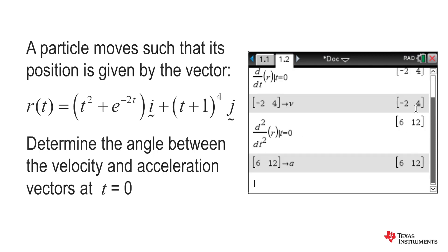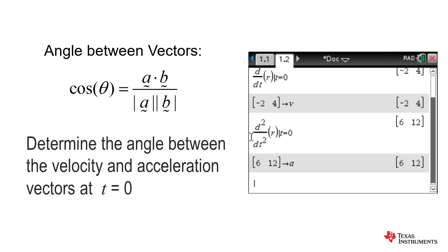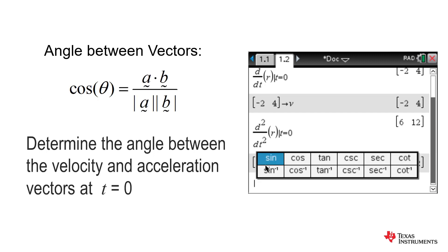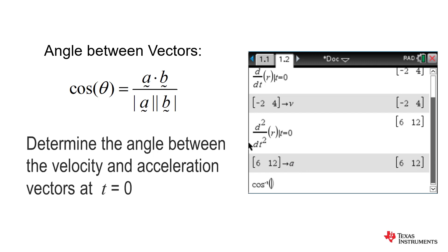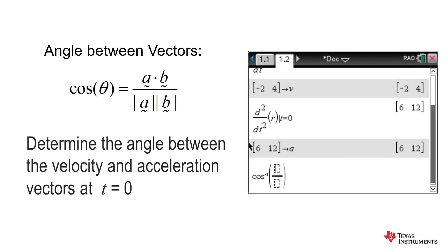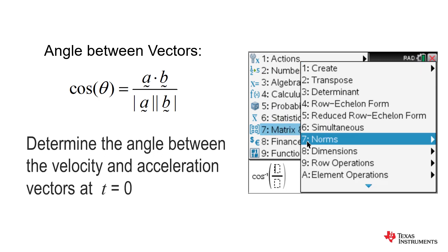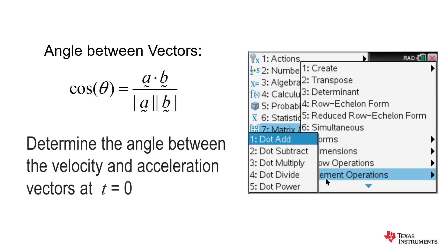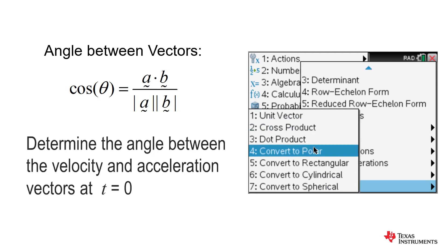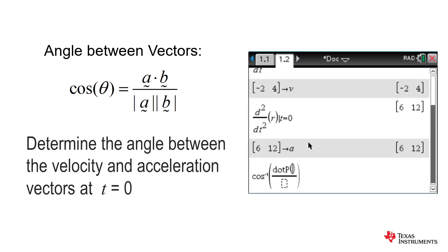So that's our velocity at t equals zero, and acceleration at t equals zero in terms of i and j, and we wish to find the angle. So using the cos of the angle formula, we need cos inverse of the dot product.